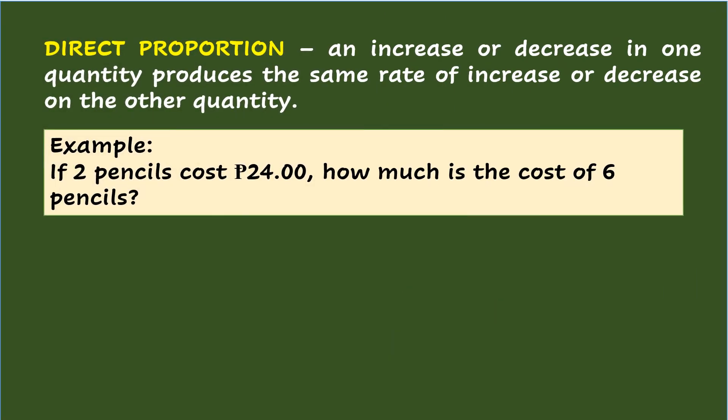A word problem involving direct proportion happens if an increase or decrease in one quantity produces the same rate of increase or decrease on the other quantity. Example: if two pencils cost 24 pesos, how much is the cost of six pencils? With this proportion problem, the first thing to do is to set up the proportion.